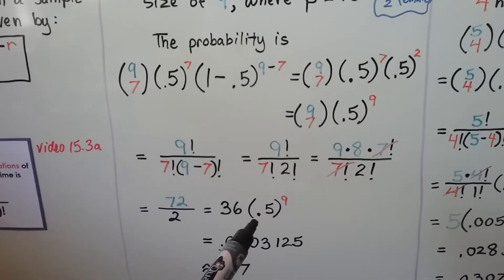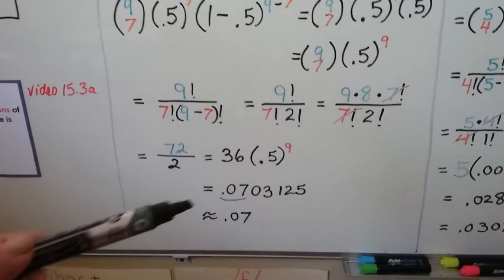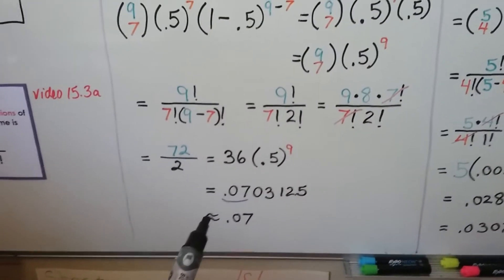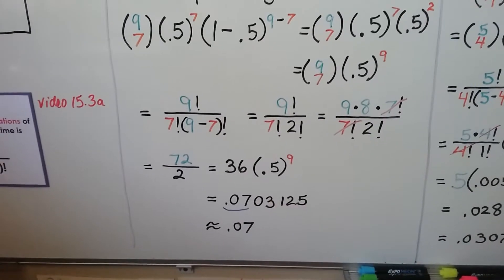We multiply it by the 0.5 to the ninth power. We get this nice long decimal that can be rounded off to approximately 0.07.